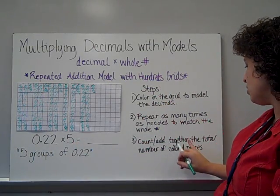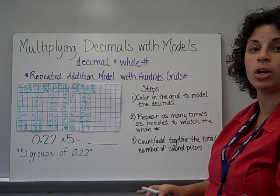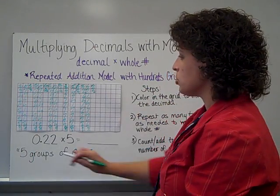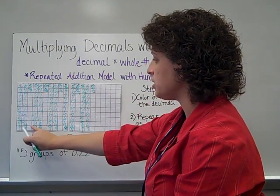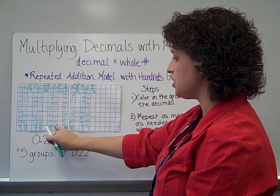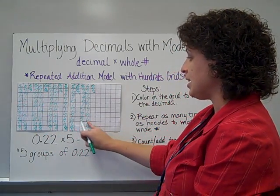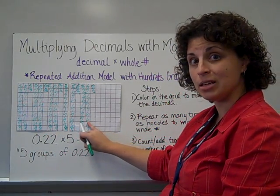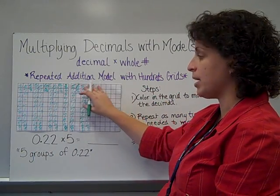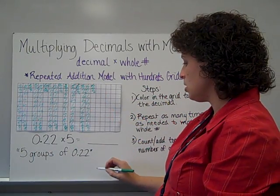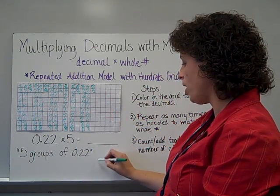And now all I need to do to solve is count or add together the total number of colored pieces. So I've got 10, 20, 30, 40, 50, 60, 70, 80, 90, 100 pieces. Well, 100 pieces would have made a whole, right? So, so far I have one whole.